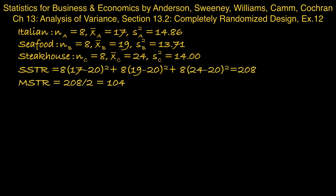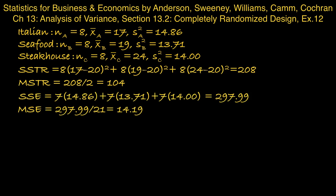The sum of squares for error, using the formula provided in the textbook, we obtain 297.99. Dividing that by its degrees of freedom, 21, we obtain 14.19 as the mean square for error.